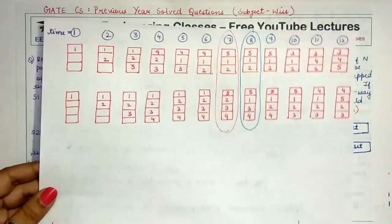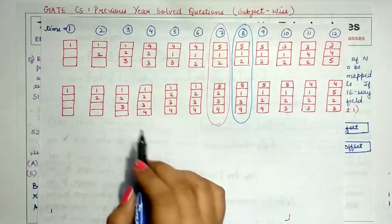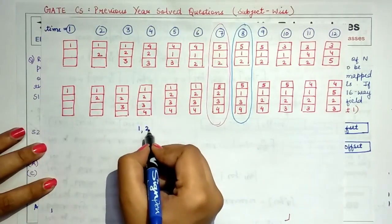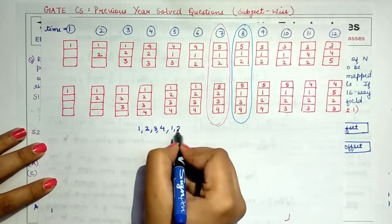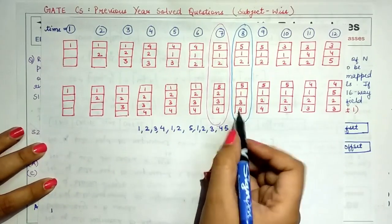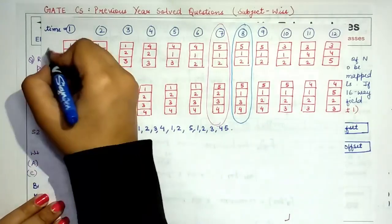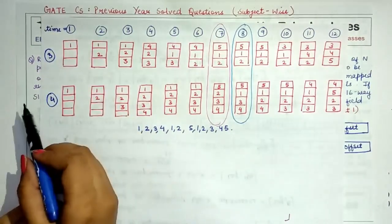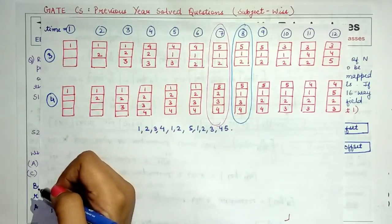I've written a quick example for reference. We have the same page reference string: 1, 2, 3, 4, 1, 2, 5, 1, 2, 3, 4, 5. I've applied the First-In First-Out (FIFO) page replacement algorithm so you can see the behavior for three frames and for four frames.